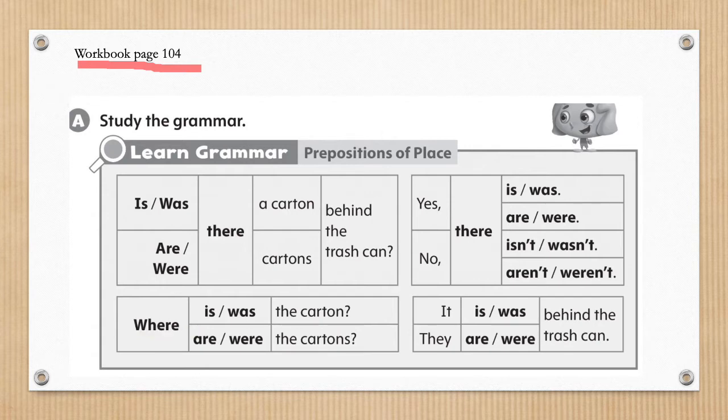Moving on to how to answer these questions, students. We can either say yes or no. So, is there a carton behind the trash can? Yes, there is. That is present tense. The past tense: was there a carton behind the trash can? Yes, there was. This is for plural, so singular and plural.